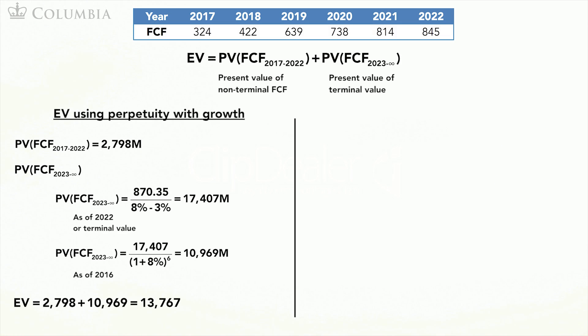Let's go back to our calculation of enterprise value. We split the free cash flows into non-terminal and terminal free cash flows and added the present value of these two pieces. One worry with this calculation is that the present value of the terminal cash flows is about 80% of the enterprise value. Moreover, we computed this value using a simple formula that depends only on the assumed growth rate of the free cash flows and on the weighted average cost of capital. The concern is that any small change in the growth rate or the weighted average cost of capital would lead to large changes in our final answer.